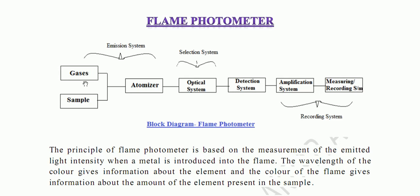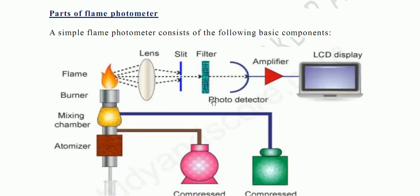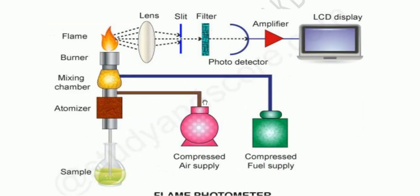What is the emission system? It contains the sample atomizer. Looking at the set of a flame photometer: this is the flame, this is the lens, this is the slit, this is the filter, this is the photo detector, and this is the display.